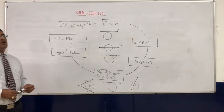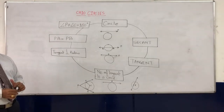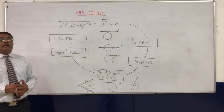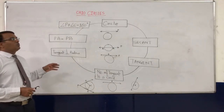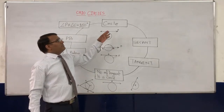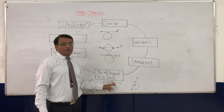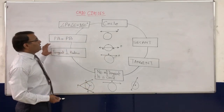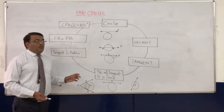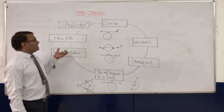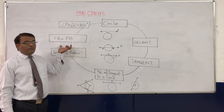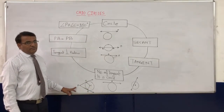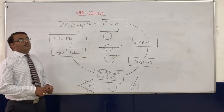So this is all about chapter number 10, Circles. In this there are only two exercises: exercise 10.1, which is very simple and easy — covering circle, secant, tangent, and number of tangents to a circle — and exercise 10.2, which depends on the properties of the tangent. Those properties are: tangent and radius are perpendicular to each other; the length of tangents from one point are always equal; and the central angle and the inclined angle sum to 180 degrees.